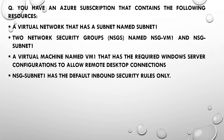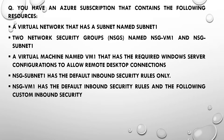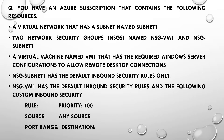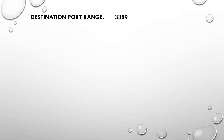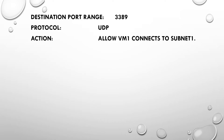NSG-Subnet1 has the default inbound security rules only. NSG-VM1 has the default inbound security rules and the following custom inbound security rule: priority 100, source any, destination any, destination port 3389, protocol UDP, action allow. VM1 connects to Subnet 1.